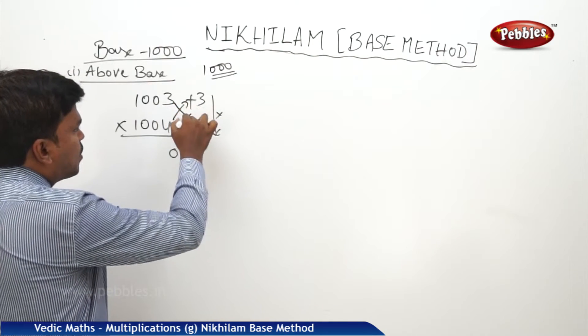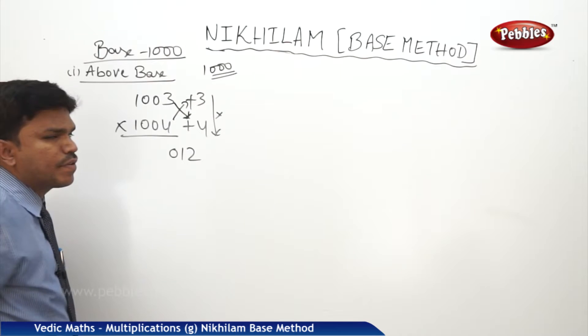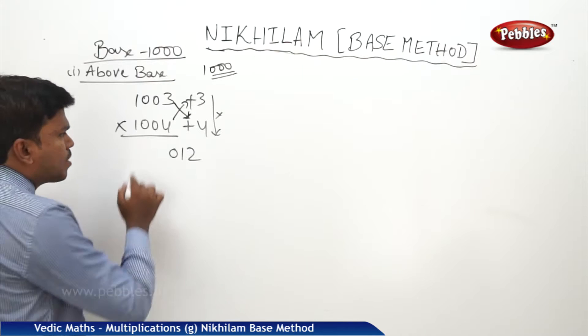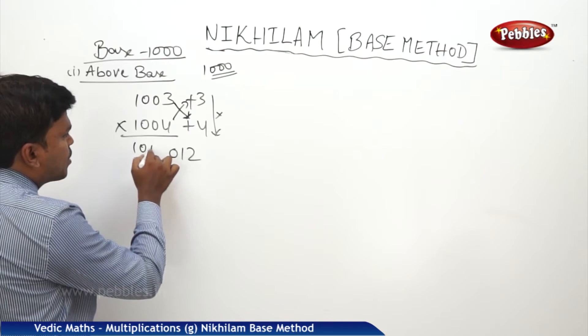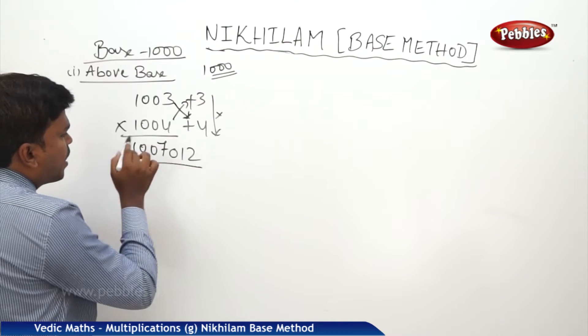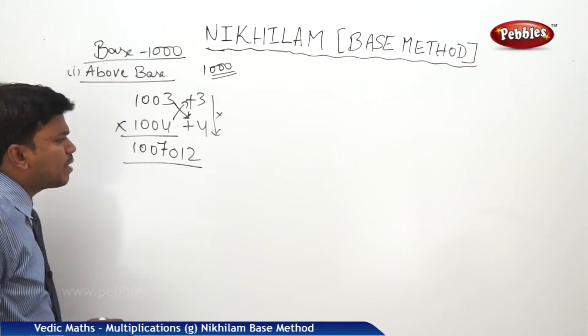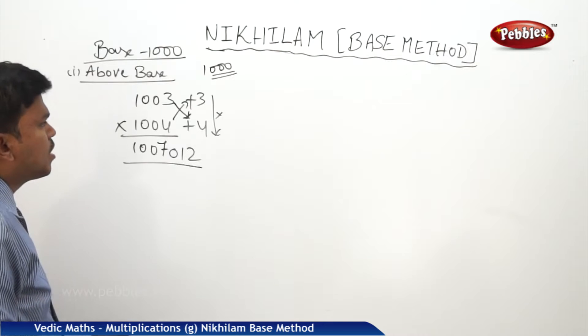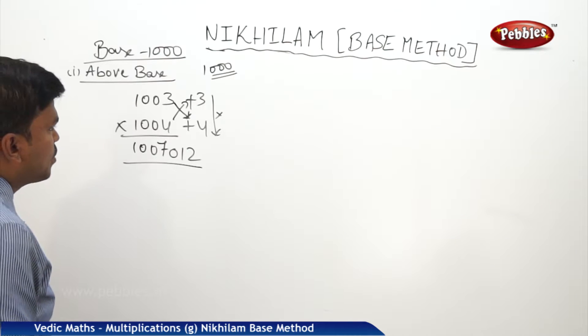Now, cross addition — either way you are going to get the same answer, that is 1007. So my answer is 1007, 012.